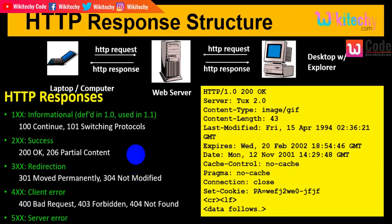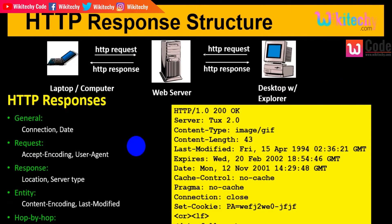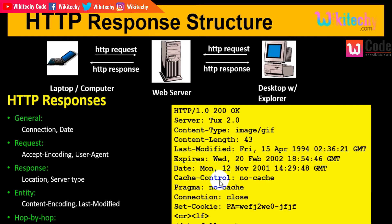These are the HTTP responses you receive when accessing a website. The response generally includes connection and date information. You can see the HTTP version, the response type (e.g., 200 OK), the server type, content type (e.g., GIF), content length, last modified date, expiry date, current date, cache and pragma information, whether the connection is open or closed, and any cookie data — this is the header information of an HTTP response.